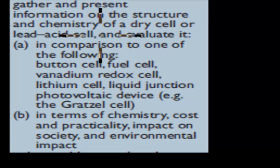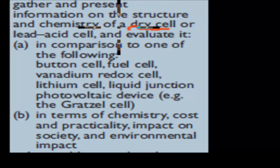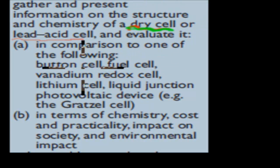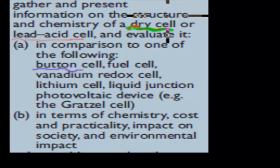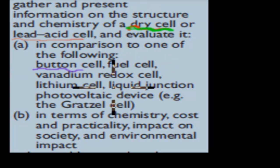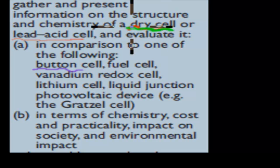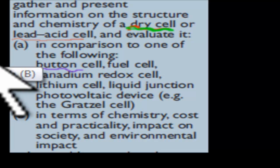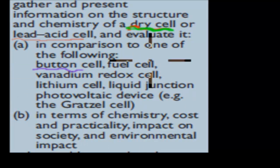We need to choose either the dry cell or the lead acid cell. I've chosen the dry cell for this video, but you can also cover the other one. You also need to compare whatever you've chosen with just one of the other cell types. I've chosen the button cell, so in this video I'll compare the dry cell to the button cell. You don't need to know more than two — one of each.